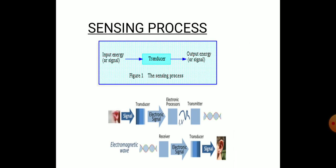The input signal is given to the transducer, which converts it to an output energy or signal. The transducer converts it into an electric signal, then some electronic processing happens and it is transmitted as electromagnetic waves. This is one type of conversion, and this is what is happening in radio stations and TV stations.